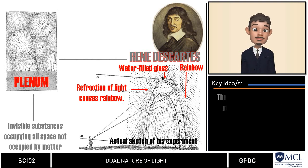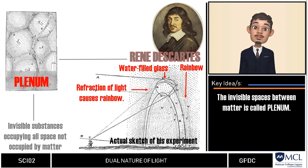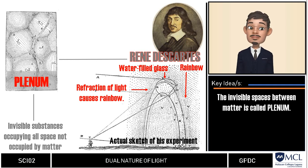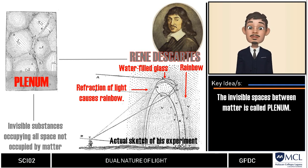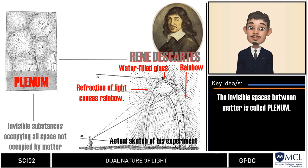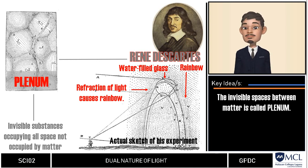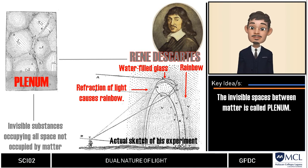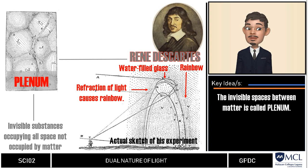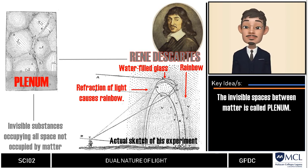Plenum is an invisible substance occupying all space not occupied by matter. He asserted that this plenum was made of small spherical particles that rotate with the same speed, and that he thought of light as a disturbance traveling through the plenum.